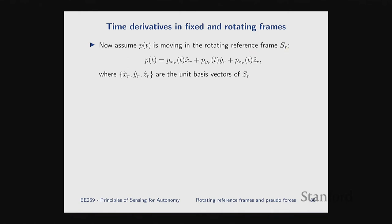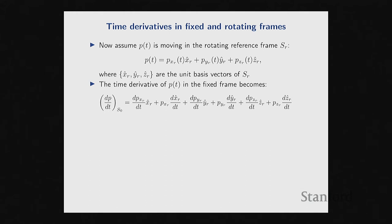We can describe the position of point P in the rotating reference frame S_R as: P equals p_x^r times x-hat_r, plus p_y^r times y-hat_r, plus p_z^r times z-hat_r, where x-hat_r, y-hat_r, z-hat_r are the three basis vectors of our rotating frame. These unit vectors describe the x, y, z coordinates of the rotating frame. In the rotating frame they're fixed — they're the basis vectors — but as observed in the fixed frame, the basis vectors of S_R are going to be rotating. Now let's find the time derivative of point P in the fixed frame S₀.